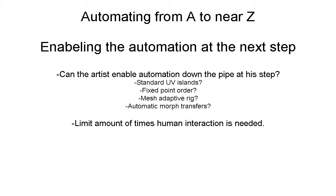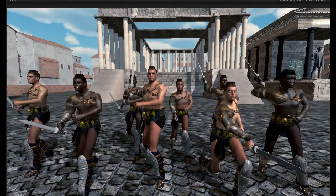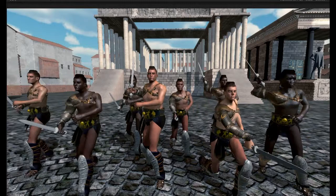What you really need to enable your artists to think is: how can they enable something further down the line? They are on their step, they only know about their step. Can you group the decisions together in central points? What amount of decisions can you make at the point when they are sitting there with the asset already open? Ultimately, you want artists to just drop a single model and have everything automatically generated.